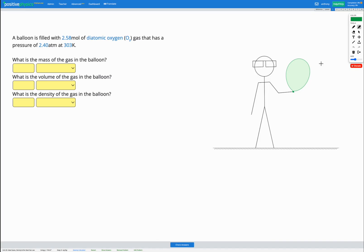In this question, a balloon is filled with 2.58 moles of diatomic oxygen, O2 gas.